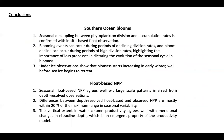Here are the conclusions from these two papers. For the first study on Southern Ocean blooms, the seasonal decoupling between phytoplankton division rates and the accumulation rate is confirmed using float observations, consistent with the satellite record. Blooming events can occur during periods of declining division rates, and bloom decline can occur during periods of high division rates — highlighting the importance of loss processes in dictating the evolution of the seasonal biomass cycle. Under-ice observations show that biomass starts increasing early in winter, well before sea ice begins to retreat.